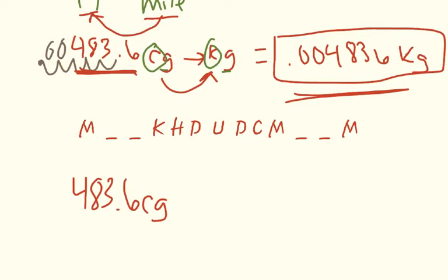So what I do is I set up a conversion factor right next to my number. Before I deal with any numbers it's first important to write out your units. On the bottom is the unit we're currently in. So I'm going to write centigram on the bottom and on the top I'm going to write the unit I'm going to.